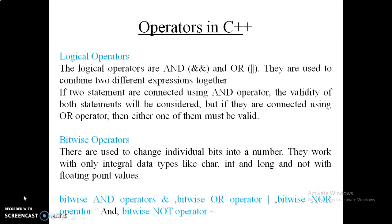The third operator is the logical operator, which works on logic as its name suggests. The first is the AND operator, whose symbol is double ampersand (&&), then the OR operator, whose symbol is double pipe (||). They are used to compare two conditions. For AND, if both conditions are true, the answer will be true; and for OR, if one condition is true, the output will be true.